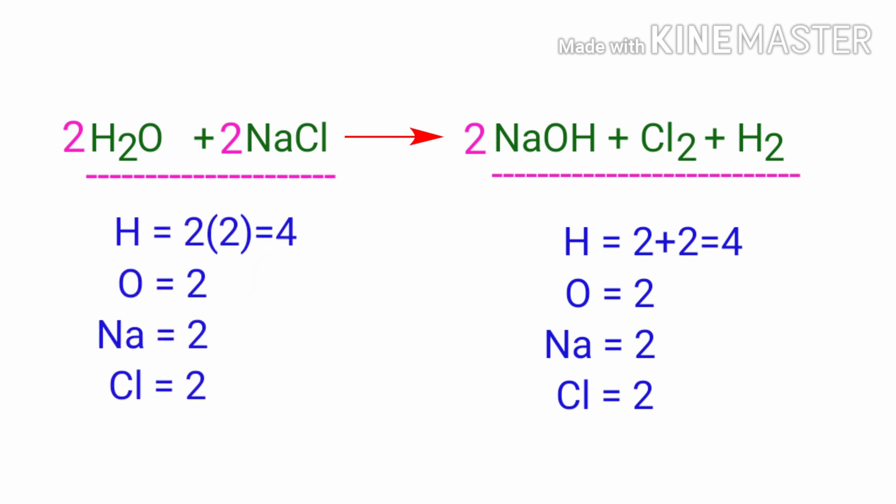The equation is now balanced. There are four hydrogen atoms, two oxygen atoms, two sodium atoms, and two chlorine atoms on both sides.